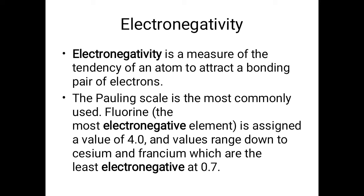Covalent bonds are formed when atoms share their electrons mutually, and that pair of electrons becomes shared between both atoms through which they make their chemical bonds. So electronegativity is the measurement of the tendency of that bonding pair towards any particular atom, and it is measured on the Pauling scale.